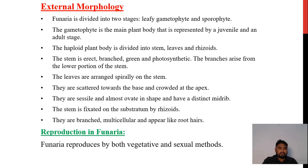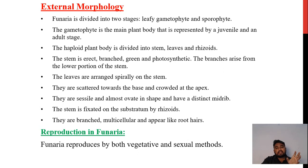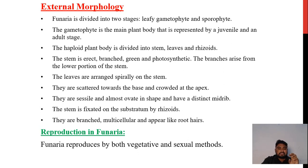The external morphology of Funaria: Funaria is divided into two stages — leafy gametophyte and sporophyte. The gametophyte is the main plant body represented by the juvenile and adult stage. The haploid plant body is divided into stem, leaves and rhizoids. The stem is erect, branched, green and photosynthetic. The branches arise from the lower portion of the stem. The leaves are arranged spirally on the stem, scattered towards the base and crowded at the apex. They are sessile and ovate in shape. The stem is fixed to the substratum by rhizoids, which are branched and multicellular, appearing like root hairs.